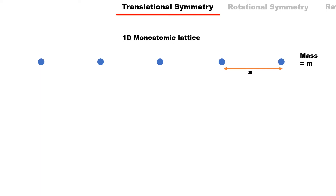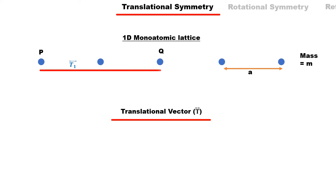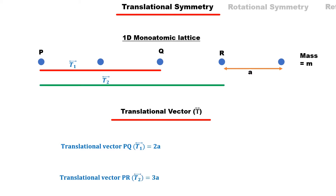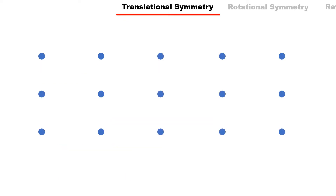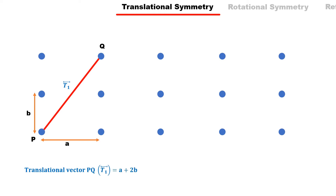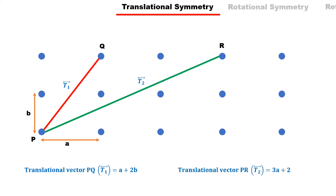Translational symmetry defines the repetition of another atom as a vector with respect to one atom, called the translational vector. As atom Q is at distance 2a from atom P, the translational vector between them is 2a. Similarly, atom R is at 3a from atom P, so the translational vector is 3a. In a two-dimensional crystal structure, the periodicity is a in the x-direction and b in the y-direction. Atom Q is at distance a in x and 2b in y from atom P, giving a translational vector of a + 2b. The translational vector between P and R is 3a + 2b.